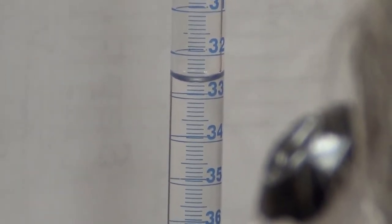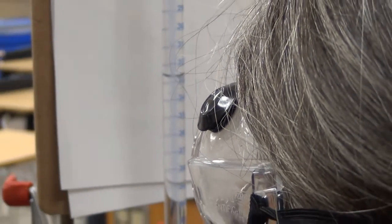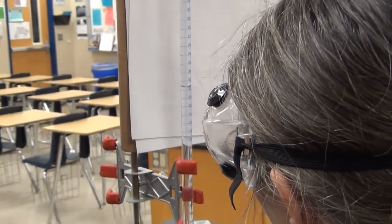It's in between 32 and 33, looks like right at the point seven line, so that would be thirty two point seven zero. Three two point seven zero, thirty two point seven zero milliliters for the ending volume of our second acid trial.